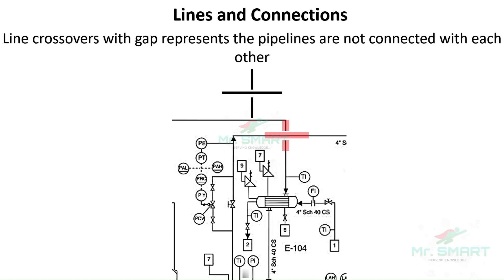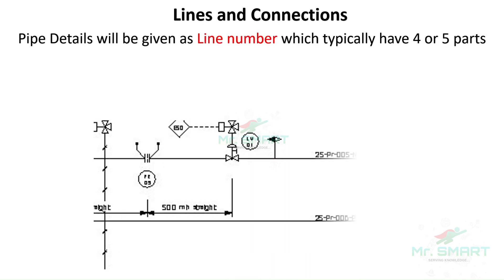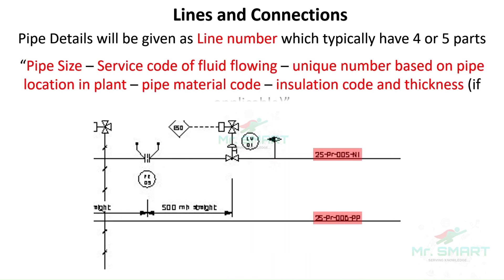Line crossovers, or lines with a gap between them, represent that the pipelines are not connected with each other. While making a physical connection, the pipes of these areas should not join with each other. All lines interpreting pipelines will be given a special alphanumeric code called a line number. A line number tells us the details about the piping connection to be made. Generally, the line number will have four or five parts and always starts with pipe size, followed by service code of the fluid flowing inside the pipe, a unique number ID given to the pipe based on its location, pipe material code, and finally insulation code and thickness if applicable.